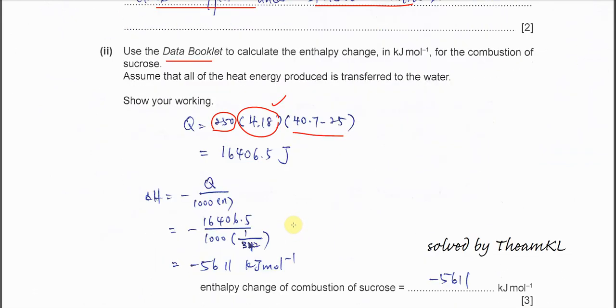After you calculate, you should get 16406.5 joules. To calculate delta H, you have to put a negative sign. So negative Q over 1000. Why Q over 1000? Because Q over 1000 will convert joules to kilojoules. Over N. The N is the moles of the reactant.